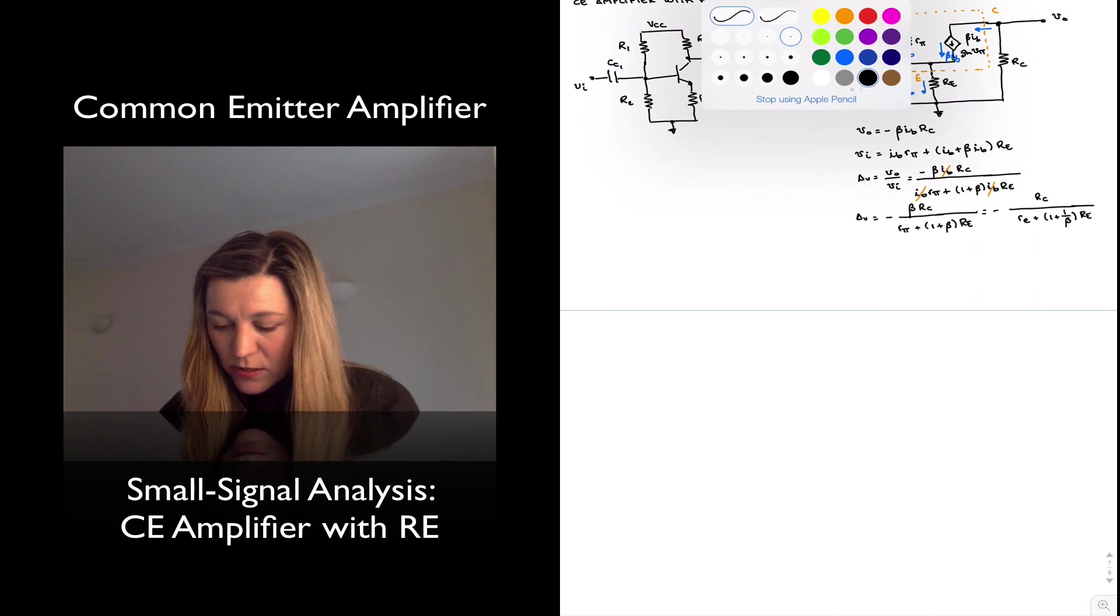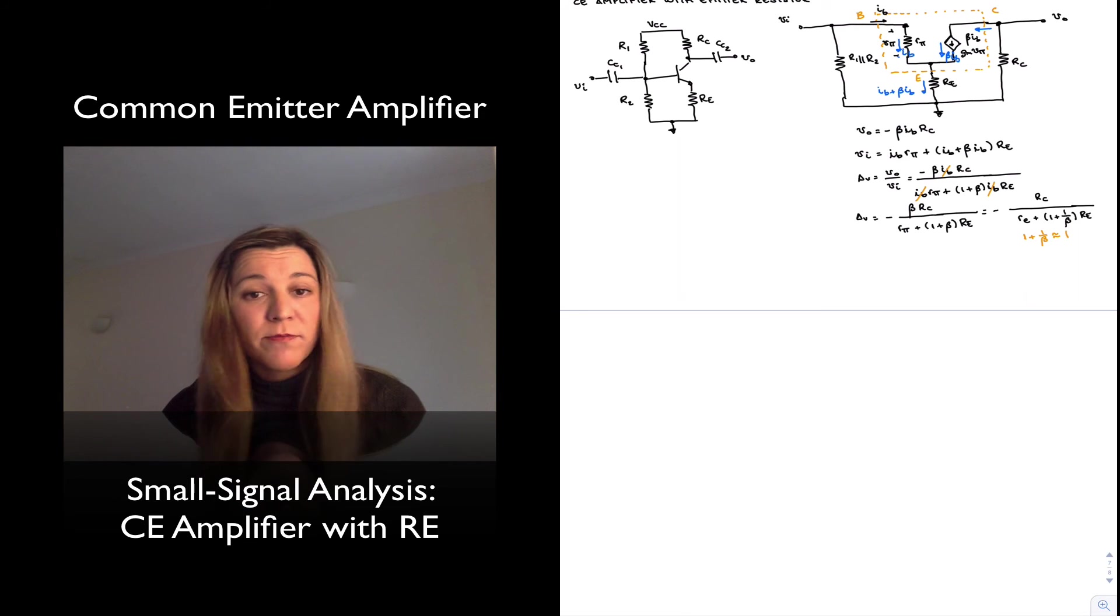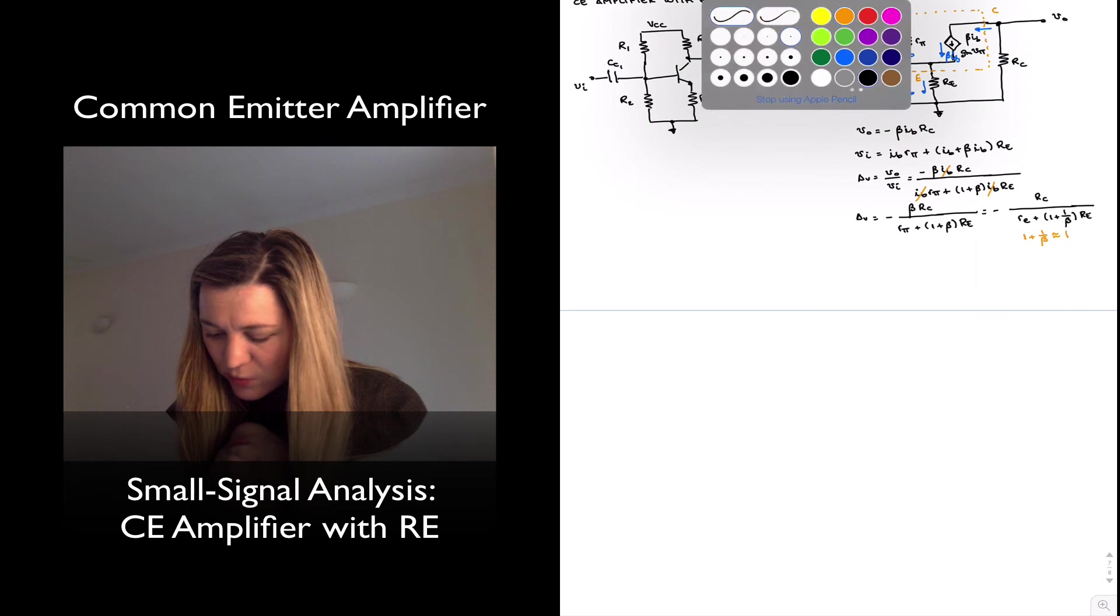And this is close to what we know. We can make the approximation that 1 + 1/beta is approximately equal to 1, since beta is typically a much larger number than 1.